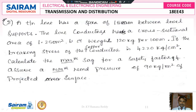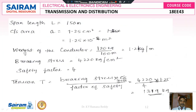Problem 2: A transmission line has a span of 150 meters between level supports. The line conductor has a cross-sectional area of 1.25 cm² and weighs 120 kg per 100 meters. If the breaking stress of the copper conductor is 4220 kg per cm², calculate the maximum sag for a safety factor of 4. Assume a maximum wind pressure of 90 kg per meter square of projected surface.